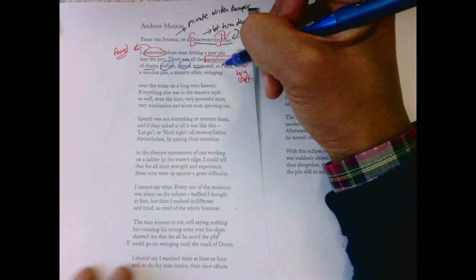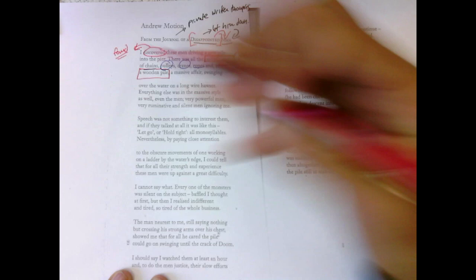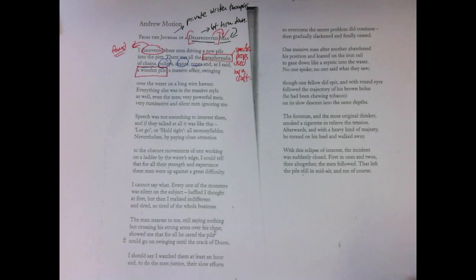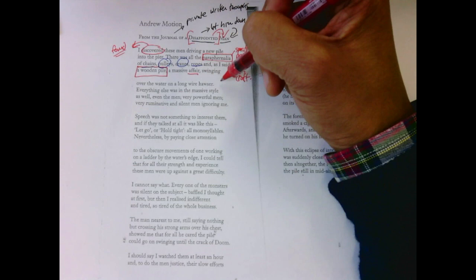They're very particular to these people's work. And I think that's one of the major themes in this poem, is what is work? And it's a massive affair, it's huge, this wooden affair, swinging over the water on a long wire hosser. Everything else was in the massive style as well, even the men.